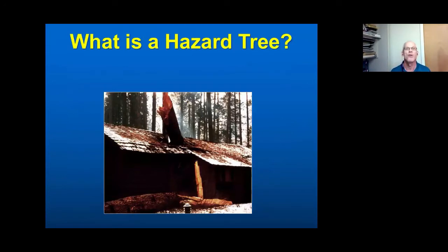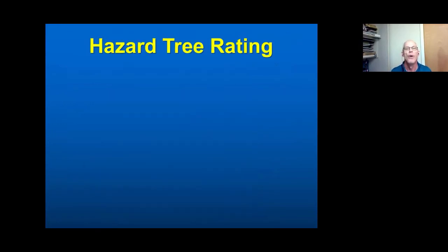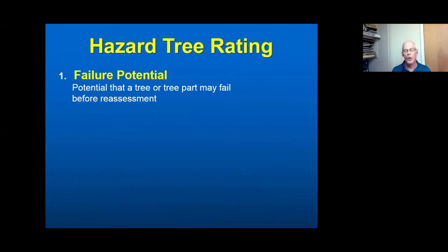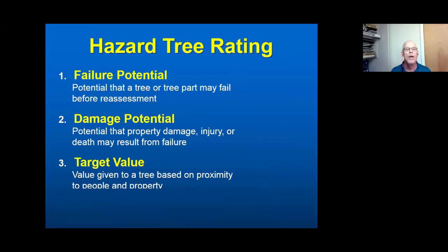So what's a hazard? A hazard tree, for our purposes today, is a tree that has indicators it could fail and cause damage. Our rating system is broken down into three parts. First is failure potential — some characteristic of the tree that may cause it to fall or fail. Second is damage potential — the potential to do damage. Third is target value, which has a couple of components primarily based on where people and valued property are located.